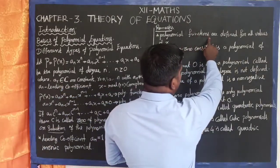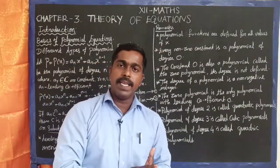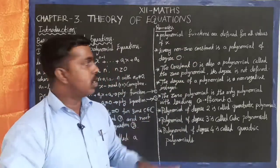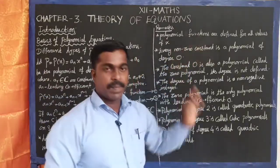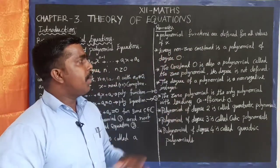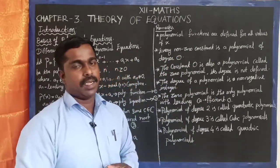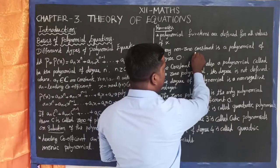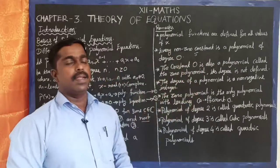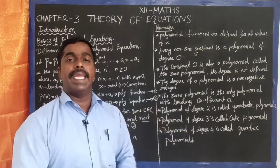Remarks: Polynomial functions are defined for all values of x; x is the variable and can take any value. Every non-zero constant is a constant polynomial — for example, the constant 5 is a constant polynomial.